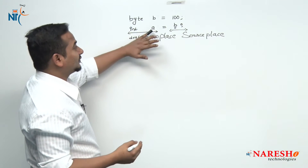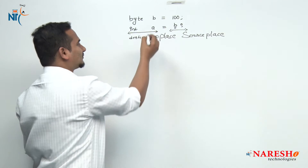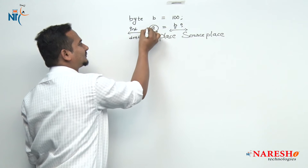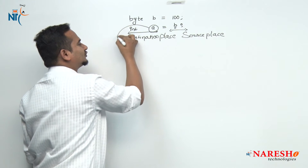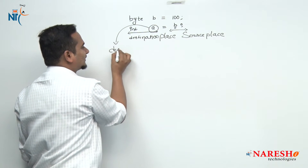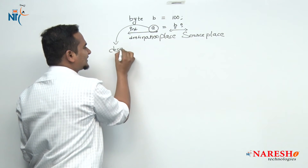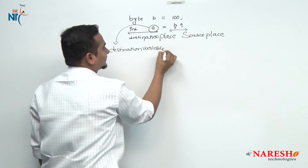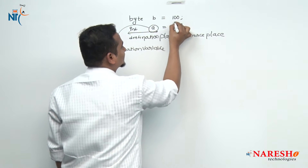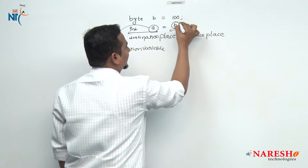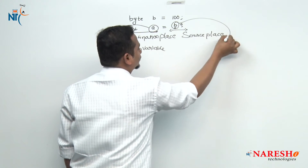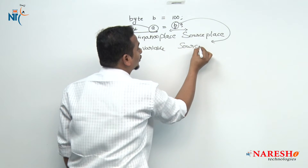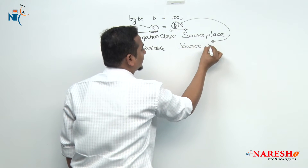This we can call the source place. The variable which is available in the destination place we can call the destination variable. The variable which is available in the source place we can call the source variable.